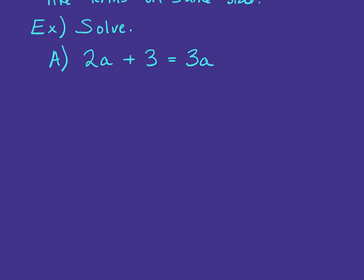So we're going to solve these equations. Our first one, problem A, is 2A plus 3 equals 3A. Notice that we have a term that has a variable on both sides of the equation. So I want to move them to the same side.